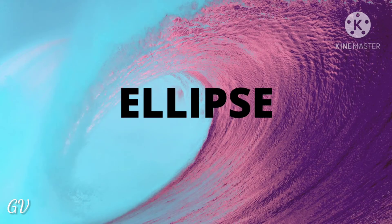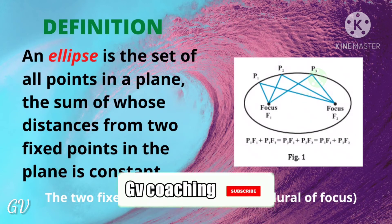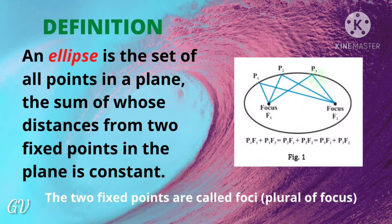Hello everyone. In the previous video we covered parabola and circle. Now let's use the definition of an ellipse. An ellipse is the set of all points in a plane the sum of whose distances from two fixed points in the plane is constant. That is the ellipse. There are two fixed points.